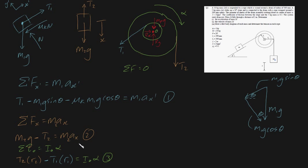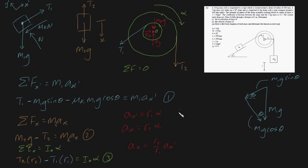We still need to reconcile the differences between ax and a_x-prime using kinematic constraints. The acceleration of the lighter block, a_x-prime, equals R1 times alpha — that's equation 4. And ax equals R2 times alpha — that's equation 5. Eliminating alpha from both gives equation 6: ax equals (R2 / R1) times a_x-prime. These kinematic relationships are key to solving the system.